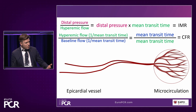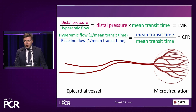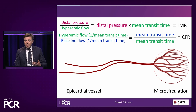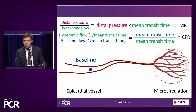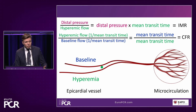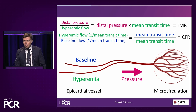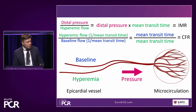We proceeded with CMD assessment as the next logical step. Two indices are the target: CFR and IMR. What's in our hands are three variables: the mean transit time at baseline produced by injecting saline at rest, the mean transit time during hyperemia produced by injecting saline after inducing hyperemia, and the distal coronary pressure (Pd) measurements — we need to ensure equalization at the beginning and no pressure drifts. These three values determine the output of CFR and IMR.